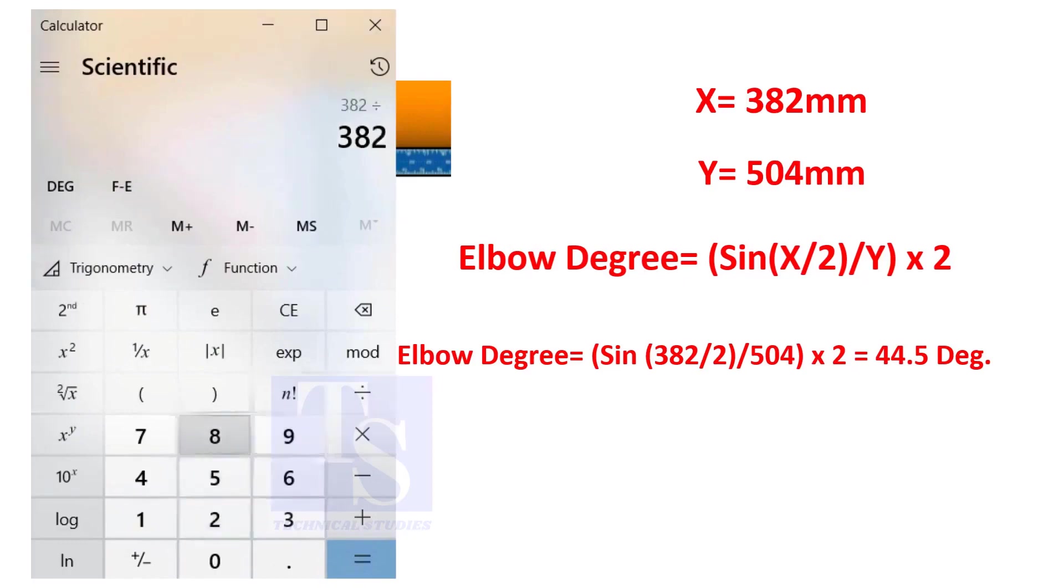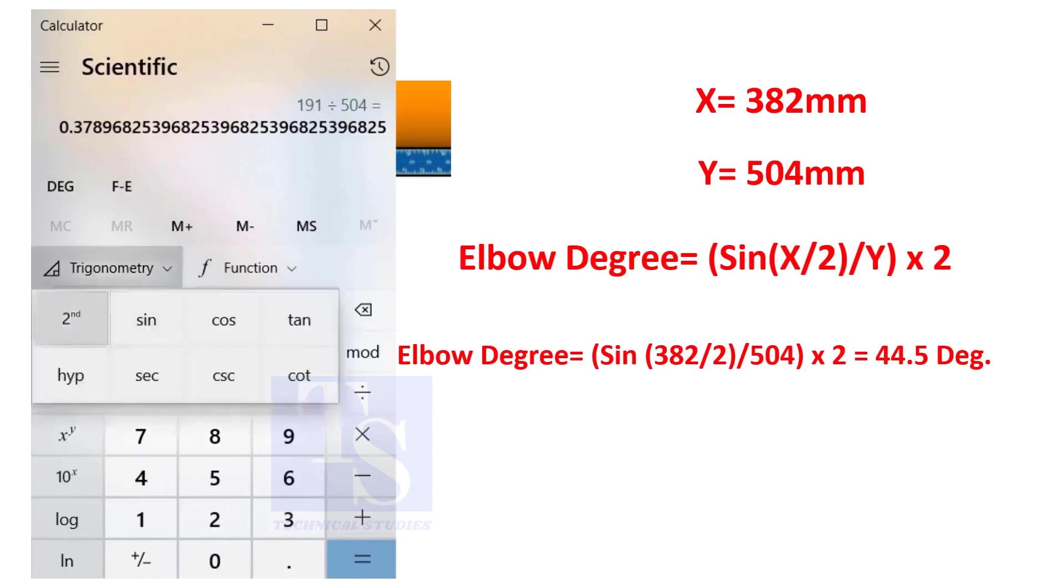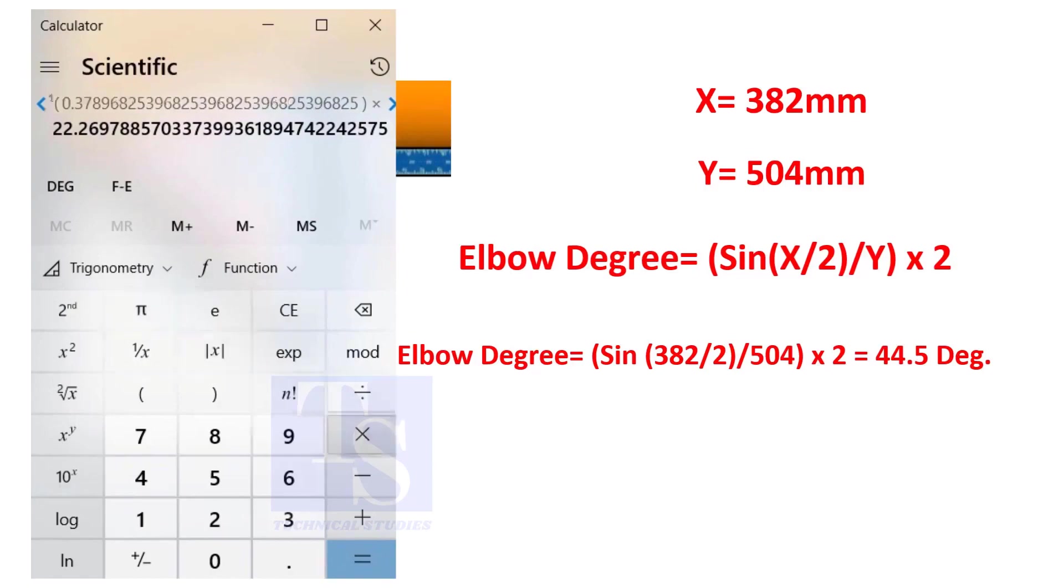You can try this method on pipe spools to measure the distortion due to welding. So, the degree of the elbow is 44.5.